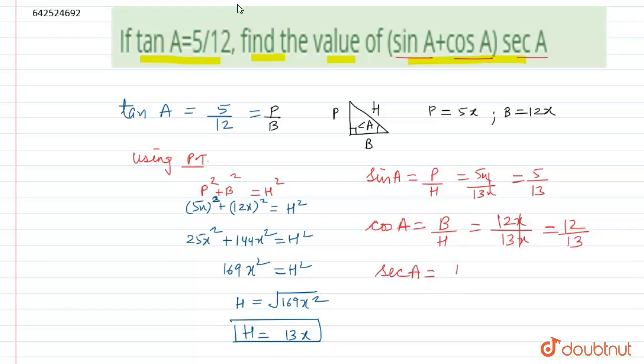Now we can also find the value of sec A, that is equal to the reciprocal of cos A, that is 1 by cos A equals to 13 by 12. Now we can easily put these values in the given equation, which is sin A plus cos A bracket into sec A.